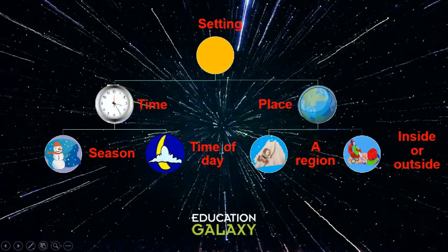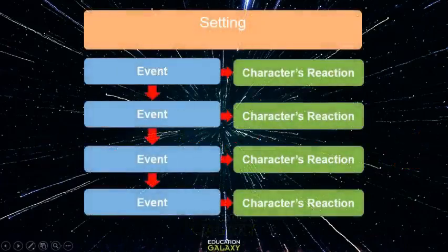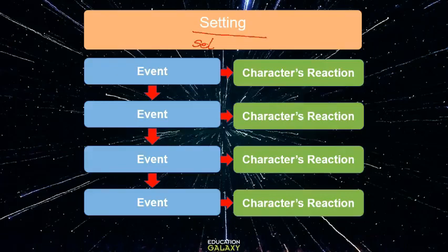Think about where and when most of the events in the story happen. Sometimes the setting changes from the beginning to the end. Let's look at a beautiful, colorful graphic organizer. Here we have setting — it tells you where a story is set or where it takes place. And we have events and characters' reactions.